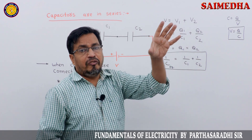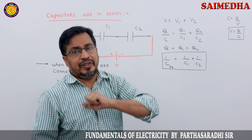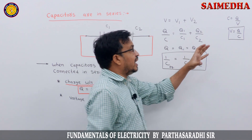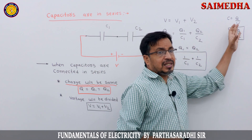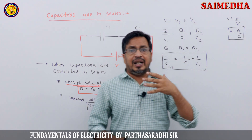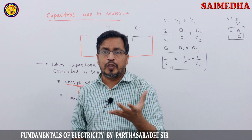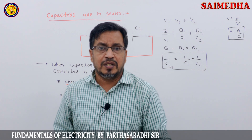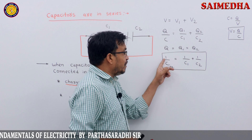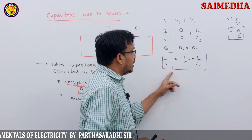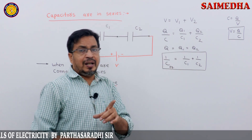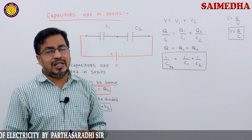So, V equals V1 plus V2. From the definition, capacitance C equals Q by V. My answer is: 1 by C equivalent equals 1 by C1 plus 1 by C2.